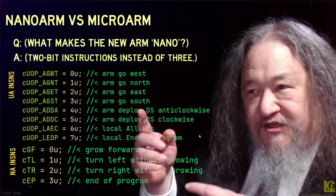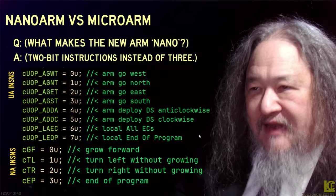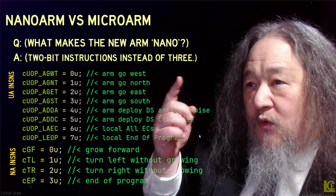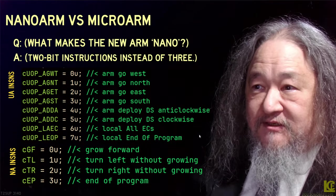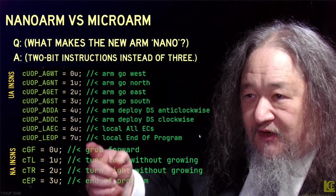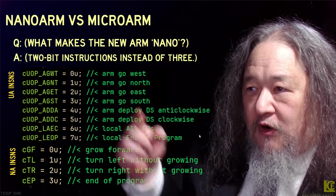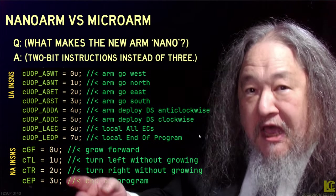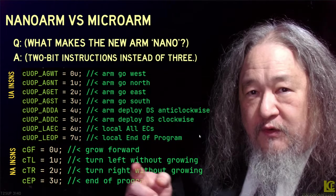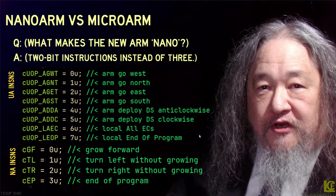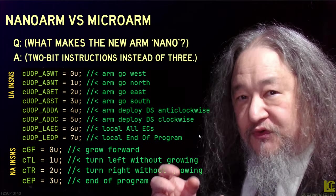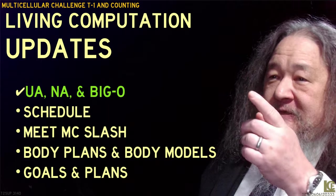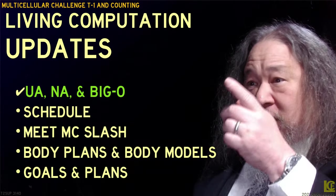Why is it called the nano-arm? Because it has two bits per instruction, whereas the micro-arm has three bits per instruction. Here are the eight instructions of the micro-arm: go west, north, south, west — it's got a bunch of different things. And the nano-arm is absolutely minimal: go forward, turn left, turn right, and done. It's like turtle geometry. It's like Logo. And it works great. So that's Wana and Big O.